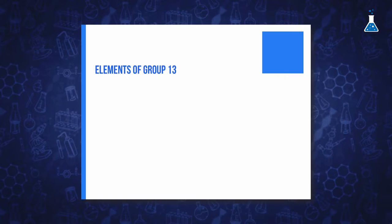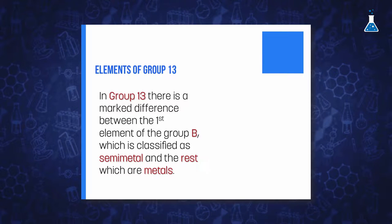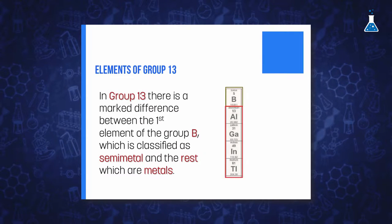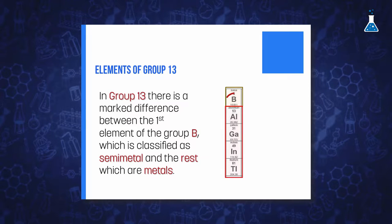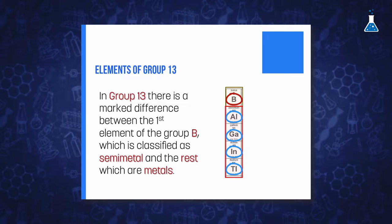Once we have finished the study of S-Block elements, let's begin with the study of metals and metalloids of P-Block. The first remarkable aspect that we observe in Group 13 is that the different properties observed in Group 2, between the first element of the column and its congeners, result more evident for elements in Group 13.